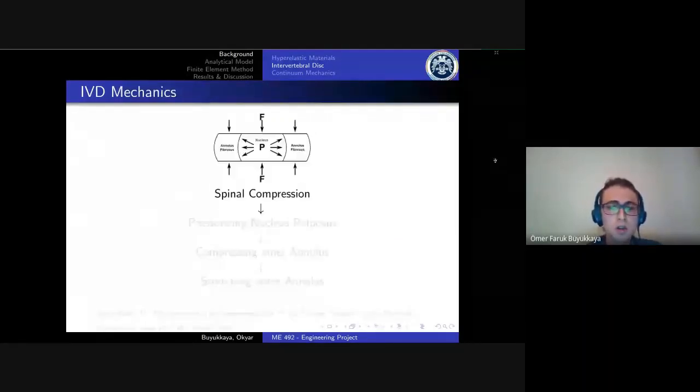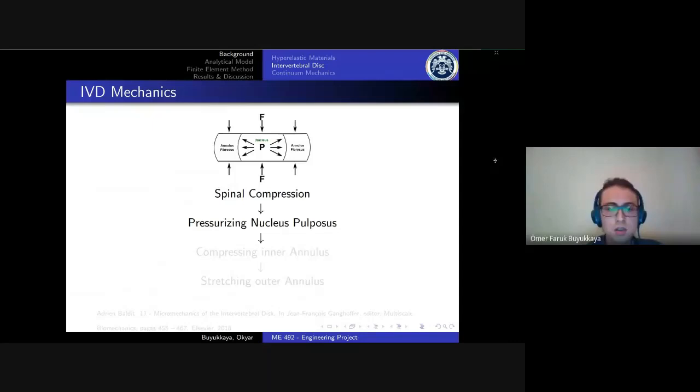The spinal compression acting on the IVD pressurizes the nucleus pulposus, and this pressure inflates annulus fibrosus by compressing the inner annulus and stretching the outer annulus.